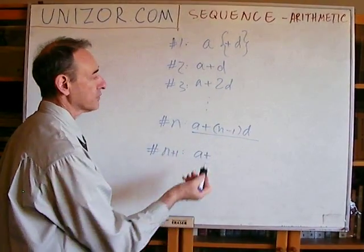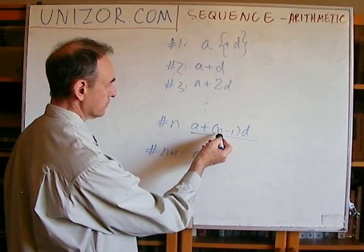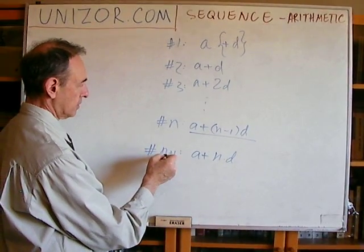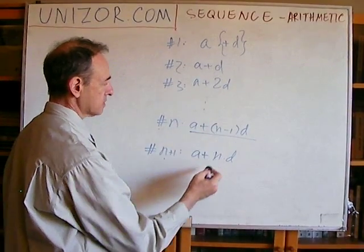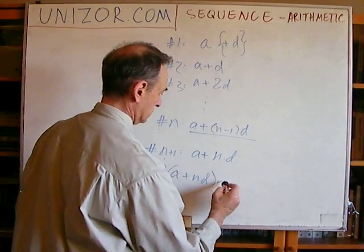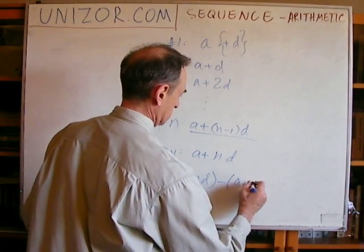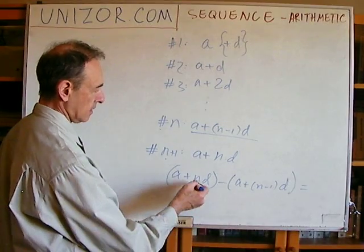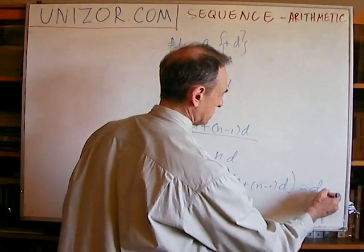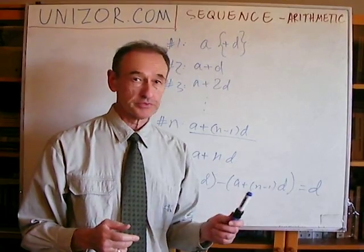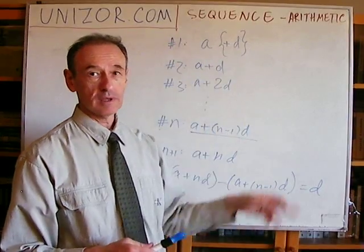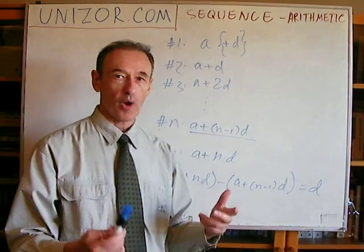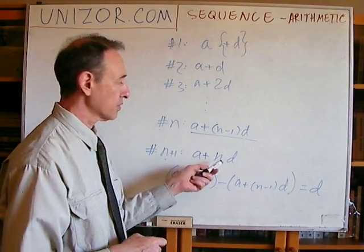Let's check it out. According to my formula, the next element — substituting N plus one instead of N — would be A plus N times D. If you subtract the Nth element from this, you get A plus N·D minus (A plus (N−1)·D). Opening all parentheses: A minus A cancels, N·D minus N·D cancels, and you're left with D. So I actually proved the formula by induction: I checked it for N equals one, then assumed the formula is correct for some N, and checked that the property is retained for N plus one.